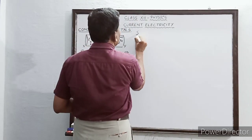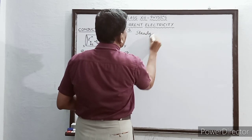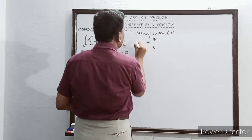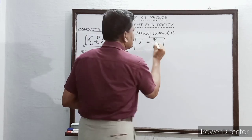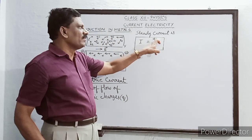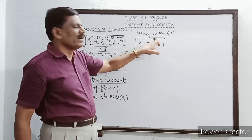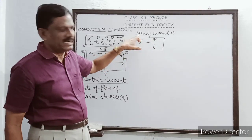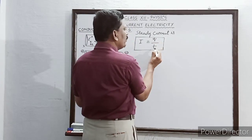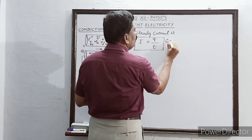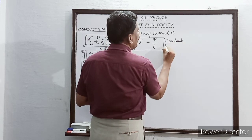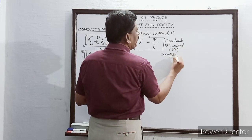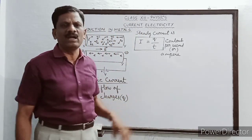When equal quantities of charges pass through the cross section in equal intervals of time, the electric current is called steady current. Steady current is denoted by I = Q/T, where Q is the quantity of charge flowing and T is the time interval. The unit of Q is coulomb and the unit of T is second, so the unit is coulomb per second, which is also called ampere. The unit of electric current is either coulomb per second or ampere.